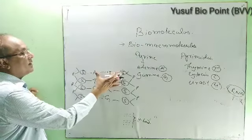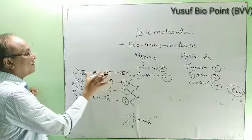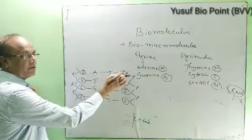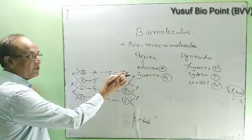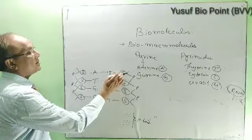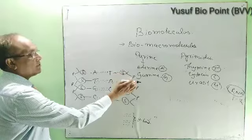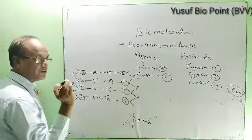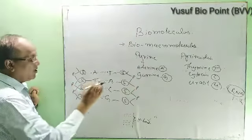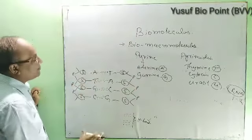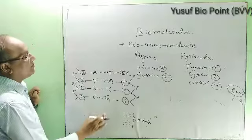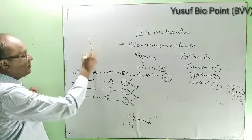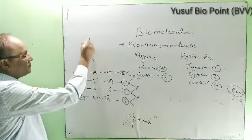The nitrogenous base plus sugar is called a nucleoside, and when the nucleoside attaches with phosphate, that forms a nucleotide. The DNA structure is double helical.